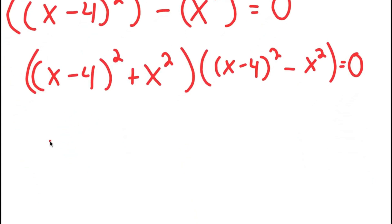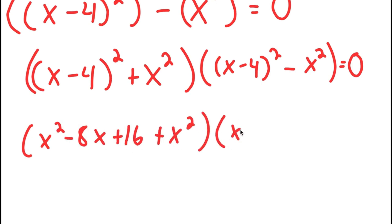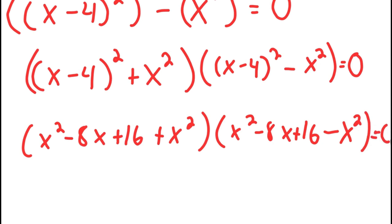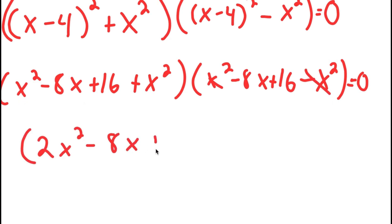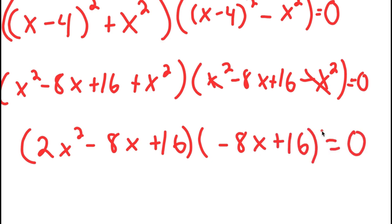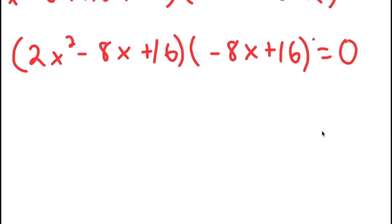I'm going to expand (x − 4) squared, so I get x² − 8x + 16. This gives me (x² − 8x + 16 + x²) times (x² − 8x + 16 − x²) equal to 0. The x² terms partially cancel and combine, and these two add to give 2x² − 8x + 16 times (−8x + 16) is equal to 0. This can be divided into two equations.